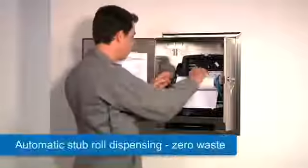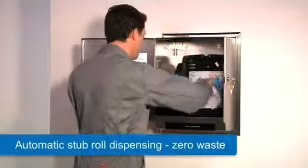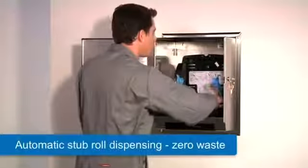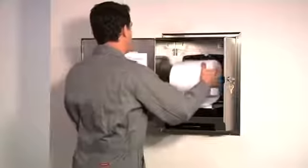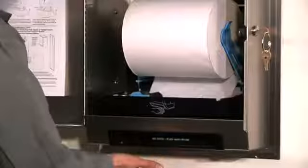The custodian is now going to fill the nearly empty dispenser. First he transfers the stub roll. The new roll is installed, and as the dispensing resumes, the stub roll is dispensed first for zero waste.